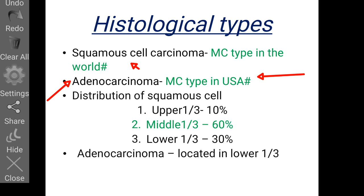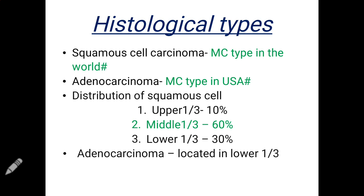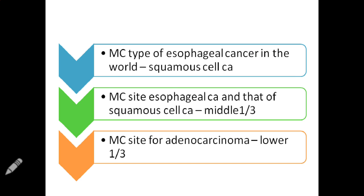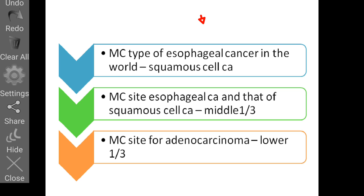The distribution of squamous cell carcinoma: it can be found in the upper, middle, or lower third of the esophagus. Most commonly it is found in the middle one third, accounting for about 60% of cases; the lower one third accounts for 30%, and the upper one third is very rarely affected. Adenocarcinoma is mostly located in the lower third. So the most common site of esophageal carcinoma overall is the middle one third, and the most common site for adenocarcinoma is the lower one third.